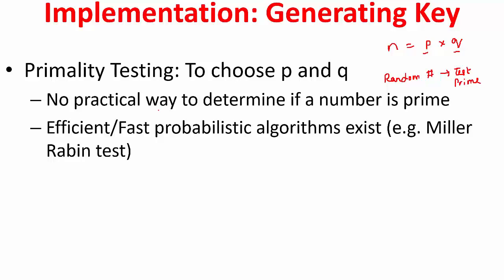But unfortunately, there is no practical way to determine if a number is prime. But there are fast and efficient probabilistic algorithms that can tell whether a number is prime or not. What probabilistic means is there is still a very small probability that this number is not prime.